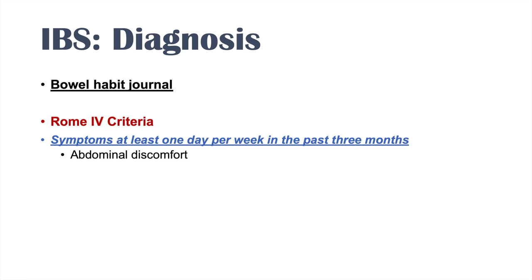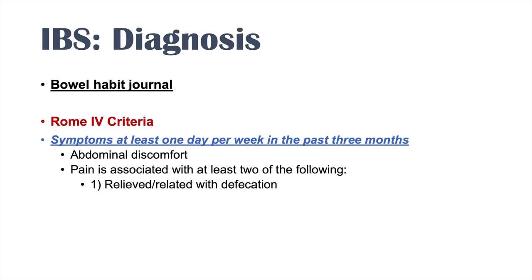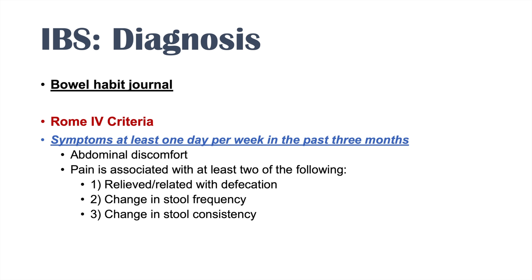The Rome 4 criteria require abdominal discomfort or pain associated with at least two of the following: one, the pain is relieved or related to defecation; two, the pain is associated with a change in stool frequency; or three, the pain is associated with a change in stool consistency. These symptoms must occur at least one day per week over a span of at least three months.